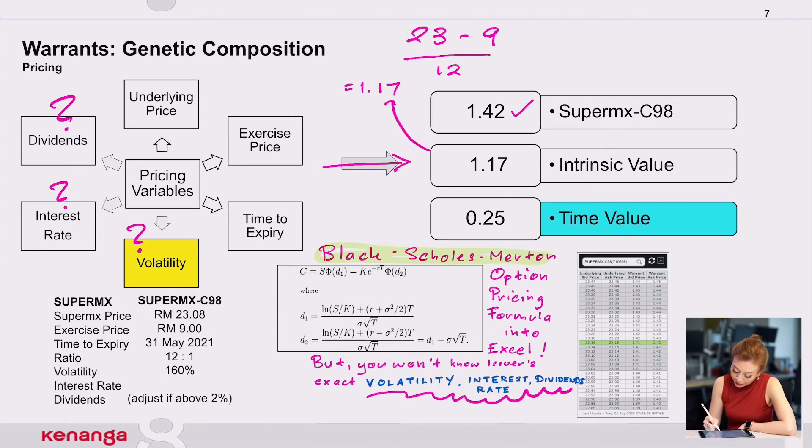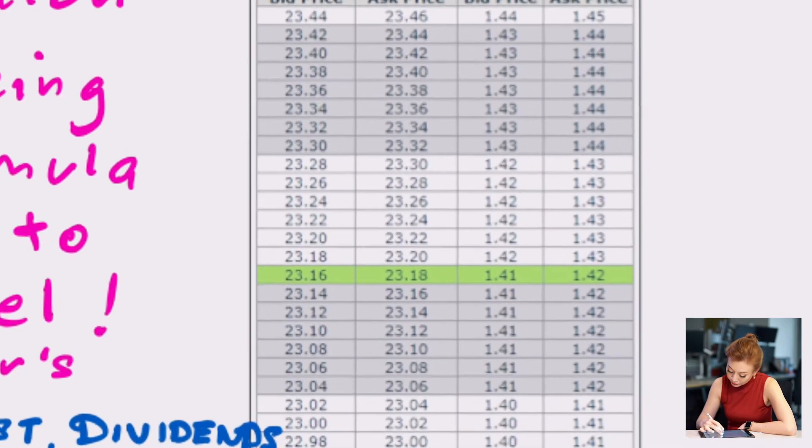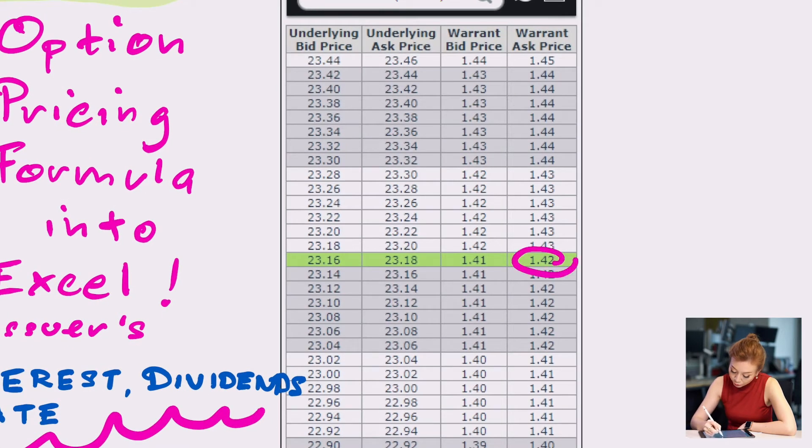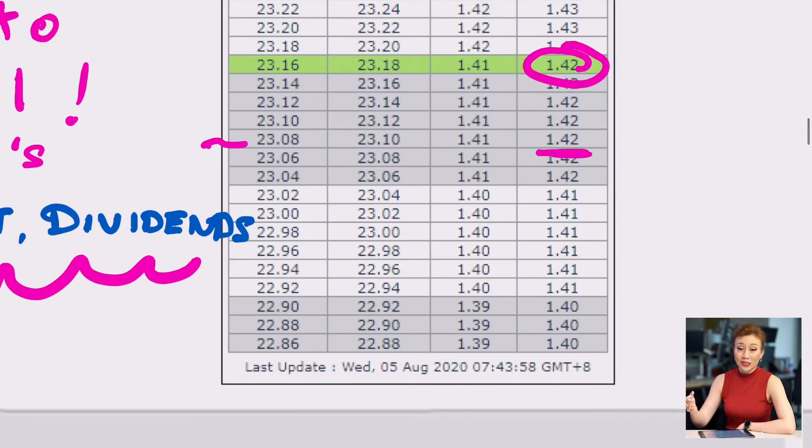The remaining is the time value. So if you actually see on the live matrix over here, Supermax C98 again, which I dragged on, 142. But what is the actual intrinsic value? 117, which you can calculate using that formula. And earlier I mentioned that we have timestamps on the live matrix to show what time it was uploaded. Obviously I screenshot that on 5th of August as I was preparing this slide.